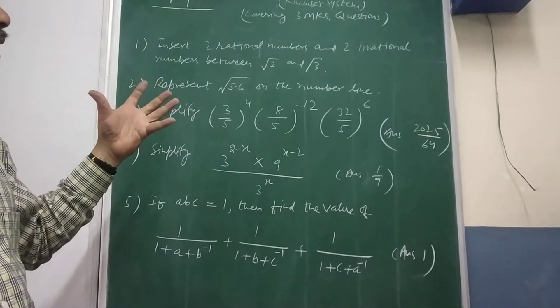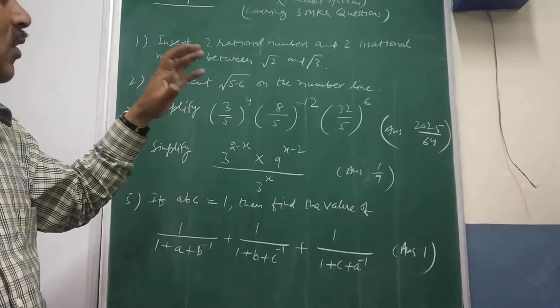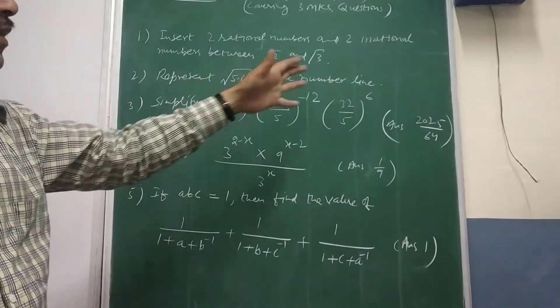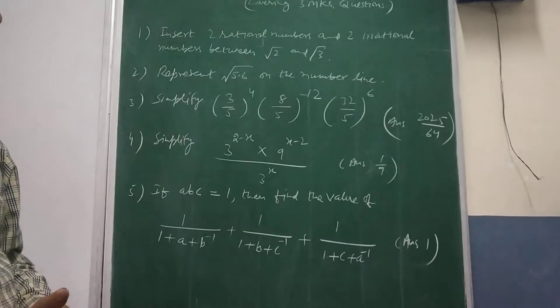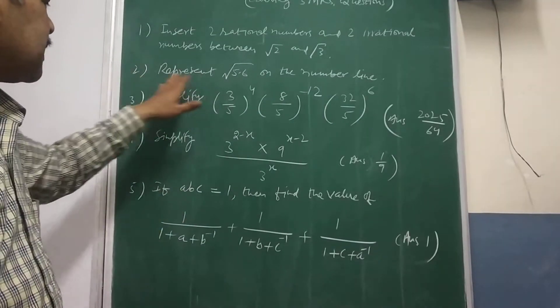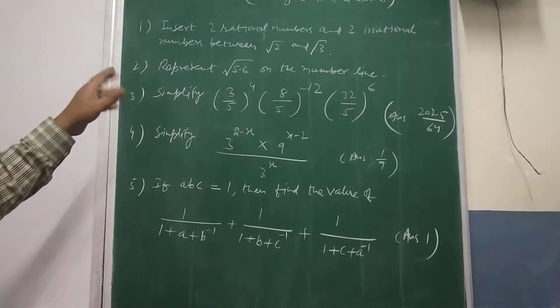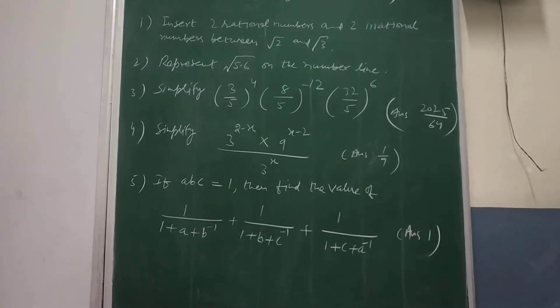So be careful about that and don't think that one particular answer will be there. Infinite answers are possible. So you are welcome with your own answer for the same. Second question today I am asking you. Yesterday √5 you have to put in the number line. So today it is √5.6.